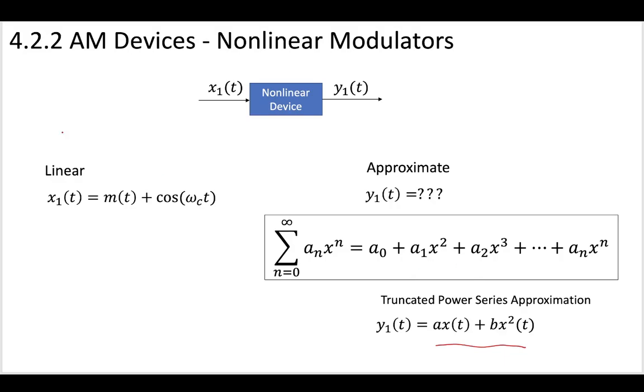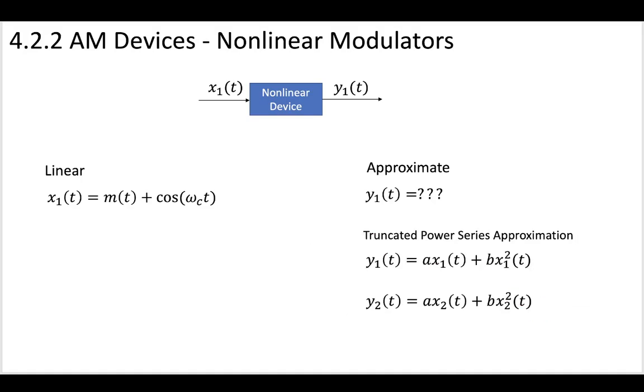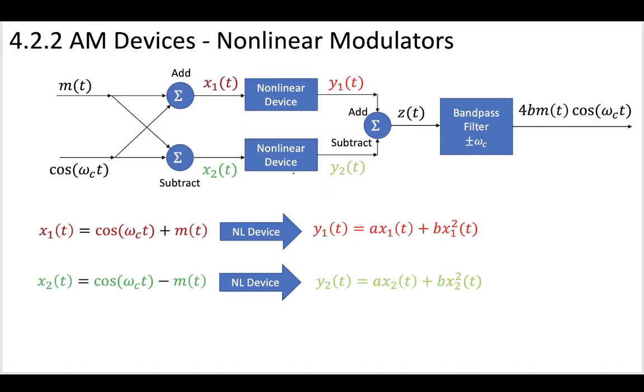We'll approximate this using these first two terms where our a_0 is equal to zero. And we'll do the same thing for y2. So both y1 and y2, after they pass through this nonlinear device, we'll approximate them using a truncated power series. Of course, there would be more if we wanted to model it exactly. But as we go on, you'll see that just by taking the first two, we'll be able to clearly understand how this modulator works. So we've approximated our x1(t), it goes through a nonlinear device, and now we have approximated it using this truncated power series. And on the bottom in green, we have this x2, we put it through a nonlinear device, and again, we approximate it using this truncated power series.